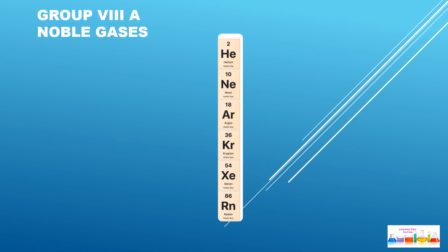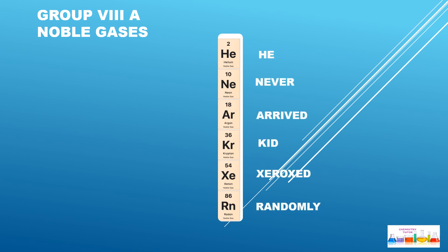Group 8A elements are known as Noble Gases. We need to learn the sentence: 'He Never Arrived, Kate. Oz Randomly.' He is for Helium, Never is for Neon, Arrived is for Argon, Kate is for Krypton, Oz is for Xenon, and Randomly is for Radon.